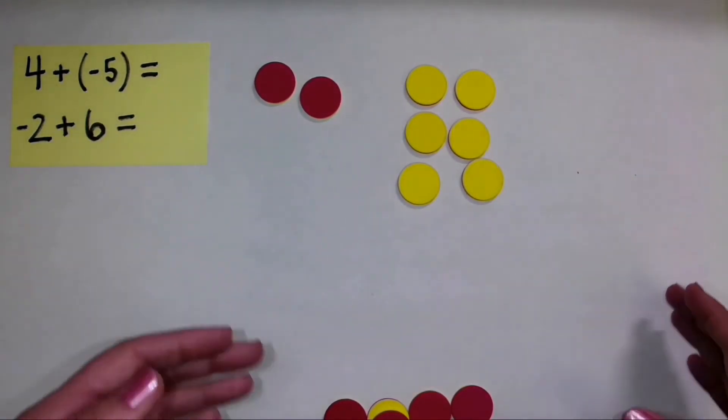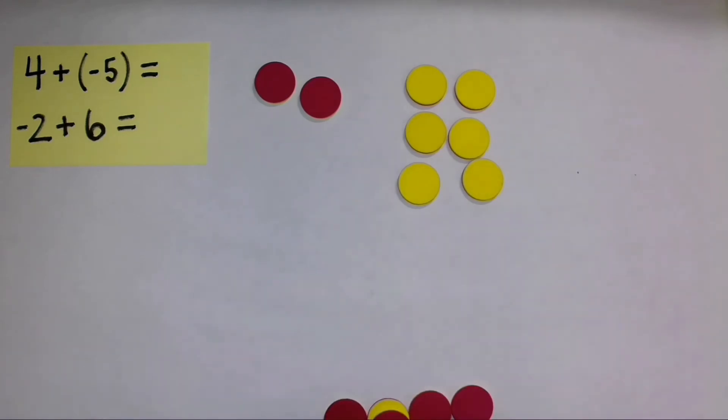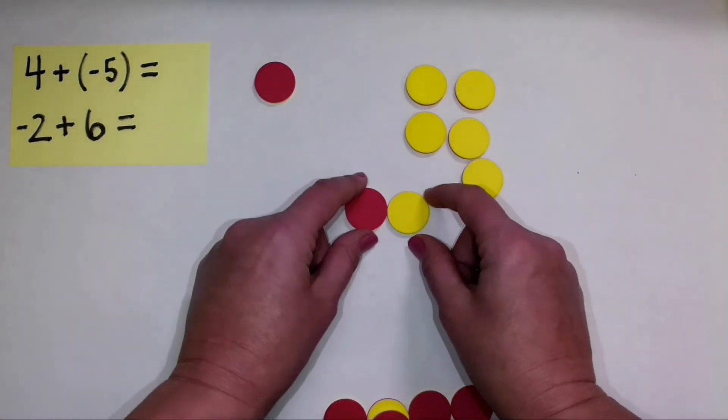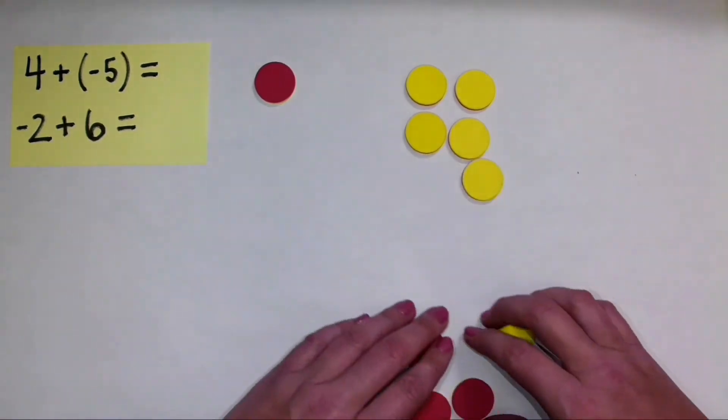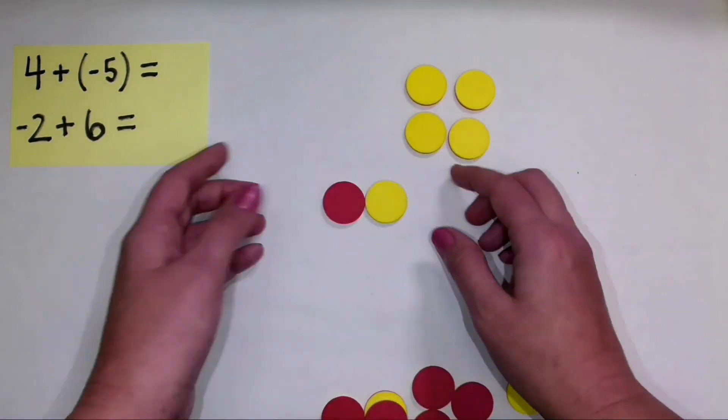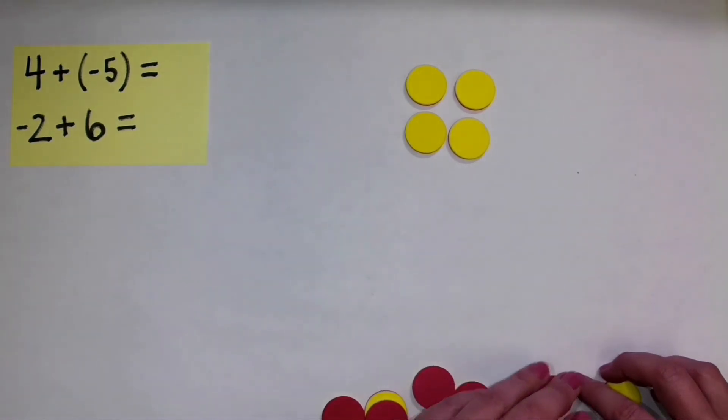Now I'm going to get either the negative side or the positive side here to equal zero using zero pairs. There's a positive and a negative. Those equal zero. Here's another positive and a negative. Those also equal zero. So now when I have negative 2 plus 6, my sum is positive 4.